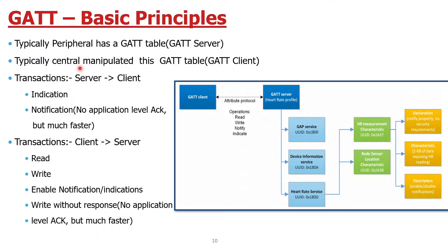The transactions you can perform with GATT include: from server to client — indications and notifications. Notifications have no application-level acknowledgement but are much faster. From client to server, we have more options: read from the server, write to the server, enable notifications and indications, and write without response — which means writing to the server without getting any acknowledgement, which is faster.